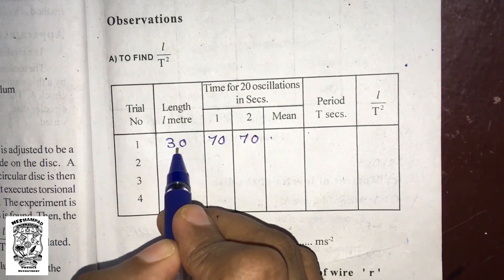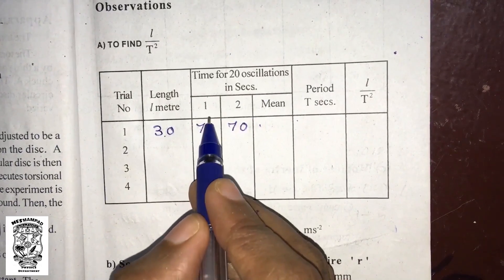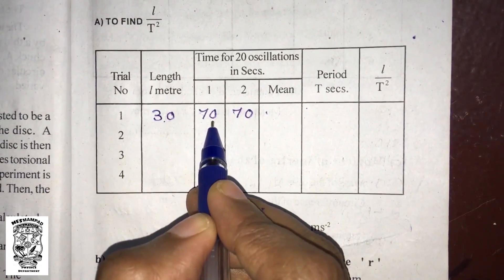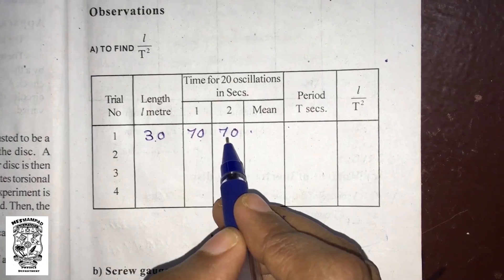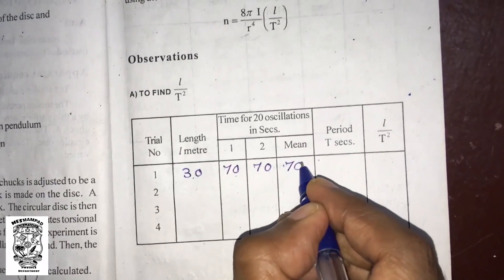The torsion pendulum oscillates. One time period for 20 oscillations is 70 seconds, so the mean time is 70.